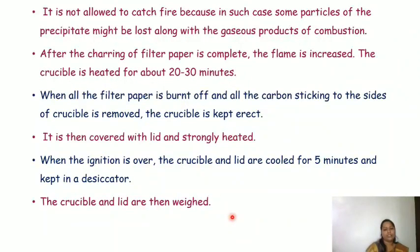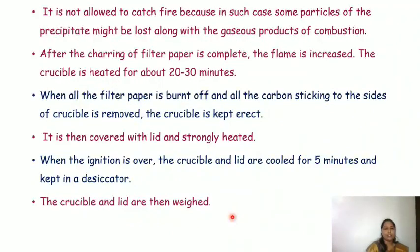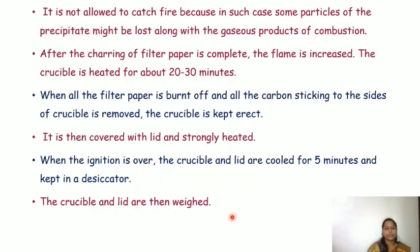The crucible and lid are then weighed. Using an appropriate formula, we can calculate the weight of the element present in the given sample. This is the gravimetric process, which involves the following steps: preparation of solution, precipitation, filtration, washing, drying, ignition, weighing, and calculations.